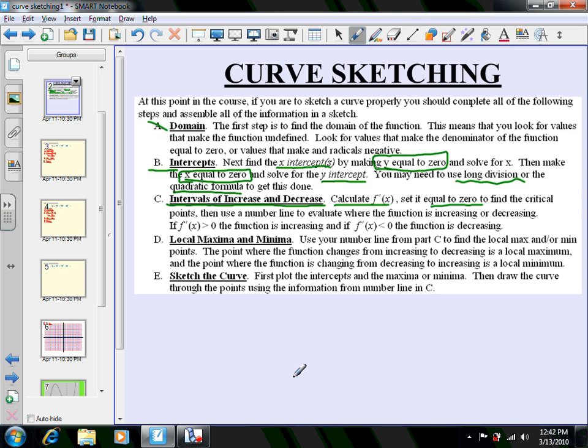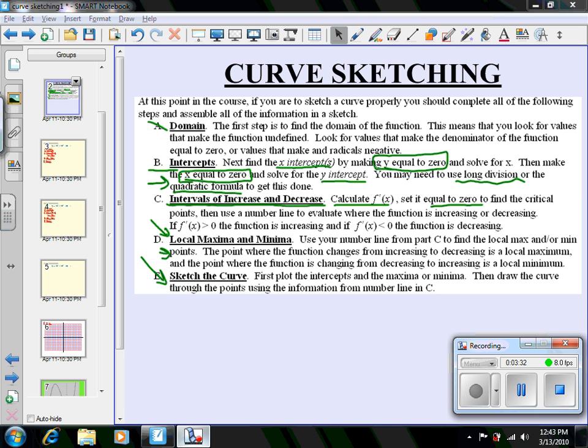Wherever the slope is positive, the function is climbing. Wherever the slope is negative, the function is falling. Where the slope is zero is the maximum and minimum points. Once we have those intervals of increase, we can quickly determine whether it's a maximum or minimum. Once you know the max/min points and intercepts, you're well on your way to drawing the picture.